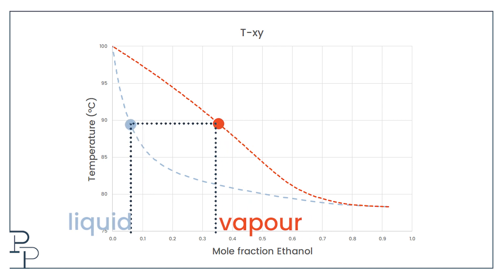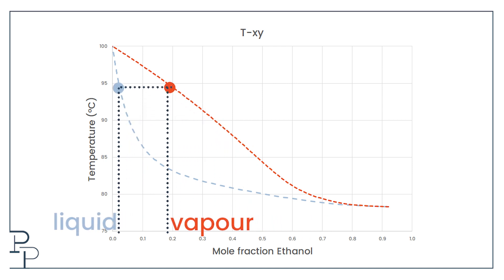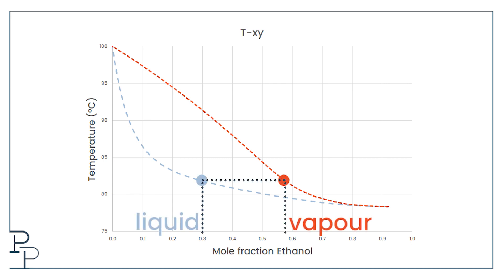We are trying to answer the question, how much liquid do I need to boil off so that the amount of ethanol in the liquid, and therefore obviously the vapor, is zero? We usually refer to the amount of ethanol in the liquid as x, and the amount of ethanol in the vapor as y. That is why this is called a temperature x-y plot.